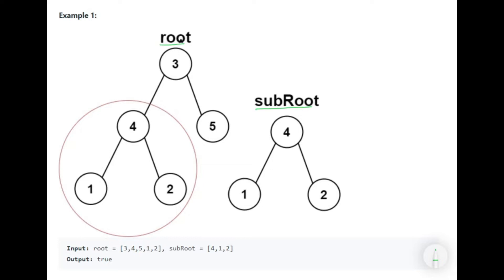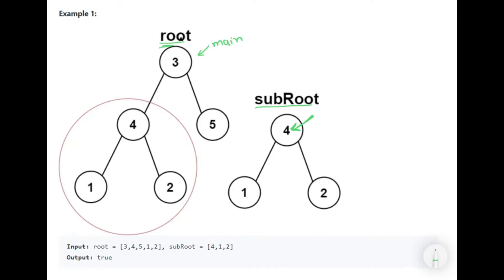The idea we are going to follow is to traverse on the main tree with root and not traverse on the sub-root right away. We will keep comparing only the root of the sub-tree to the nodes of the main tree. We will start traversing the main tree — let's call it 'main' — and the other as the 'subtree'.